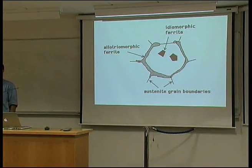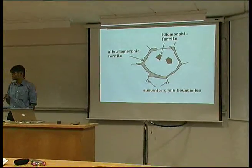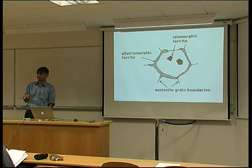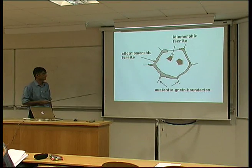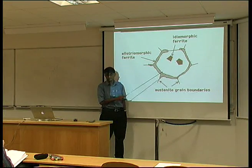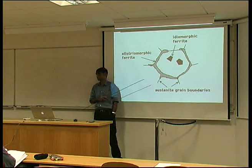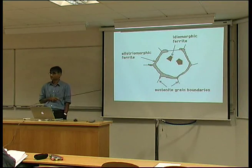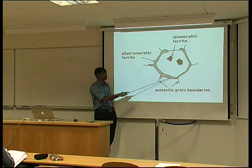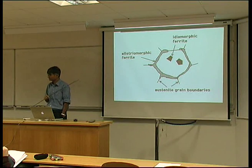Diffusion is also easier along a grain boundary, because there's a lot of free volume at a grain boundary. The atoms don't know whether they belong to one grain or the other. And therefore, the growth rate along the boundary is faster than growth in a normal direction. So the shape in which this ferrite grows is really a reflection of the boundary, rather than of the crystallography.